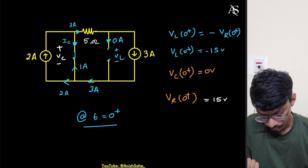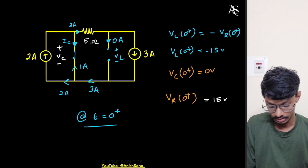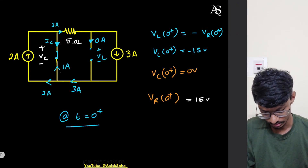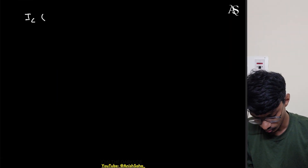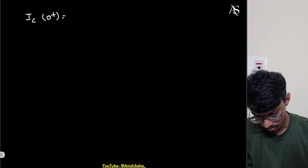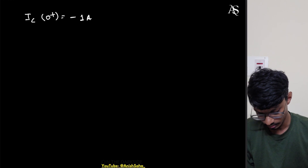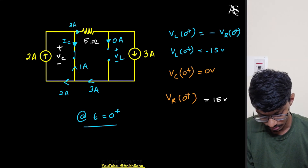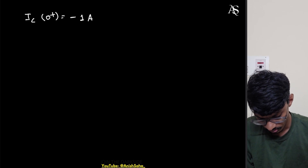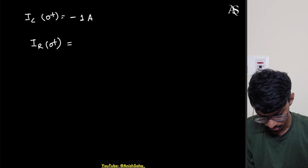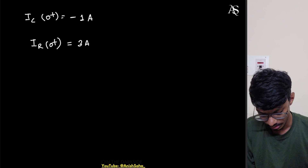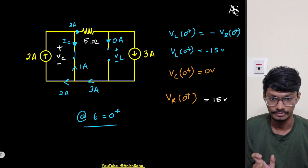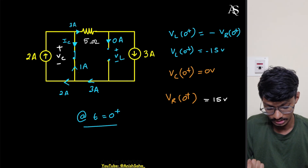Now for the initial currents: the capacitor current flows in the opposite direction to our assumed direction, so IC(0+) = −1 amp. IR(0+) = 3 amps. IL(0+) = 0 amps, since the inductor current cannot change instantaneously.